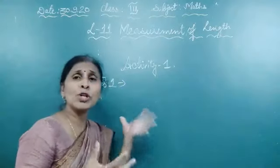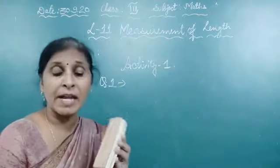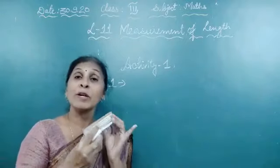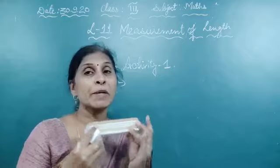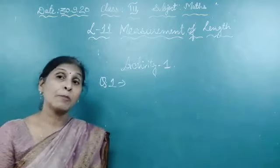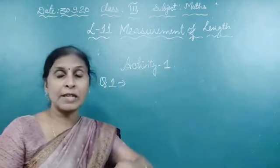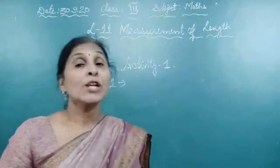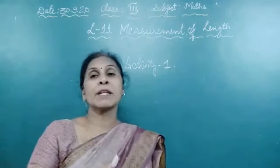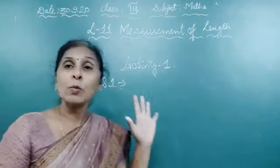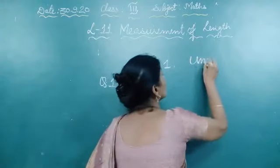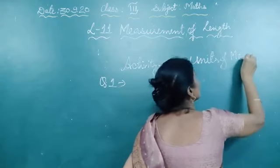You have seen, children, small objects like a duster. We measure small objects with the help of a ruler. So when we measure something small, we use a ruler. Units of measurement.